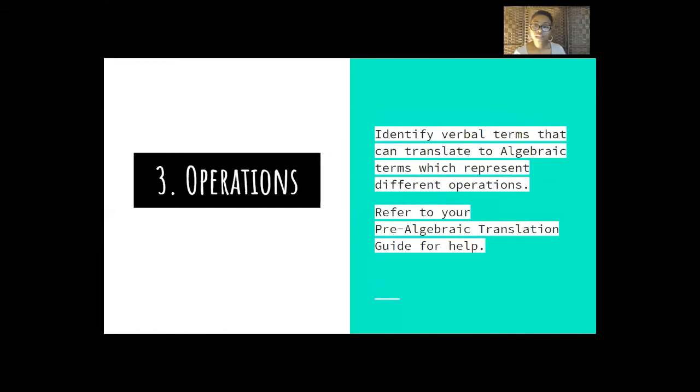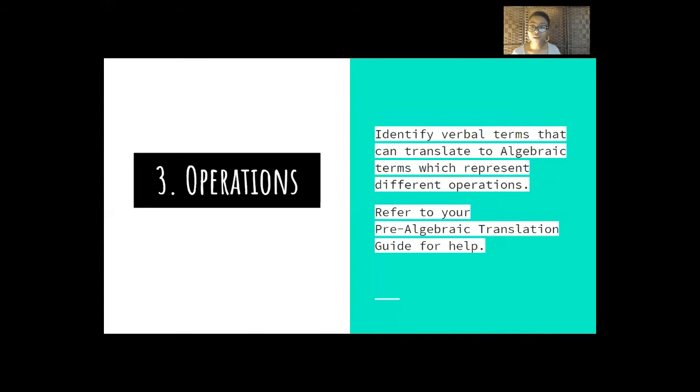Number three that we're going to be looking for are operations. Now, these are going to be hidden in the words. What you need to do is identify verbal terms that can translate to algebraic terms. And these represent the operations. You're going to refer to your pre-algebraic translation guide to help you. If you want the guide, please put guide in the comment section so I know you want it. And I'm going to show you how you can get the guide by the end of this video.